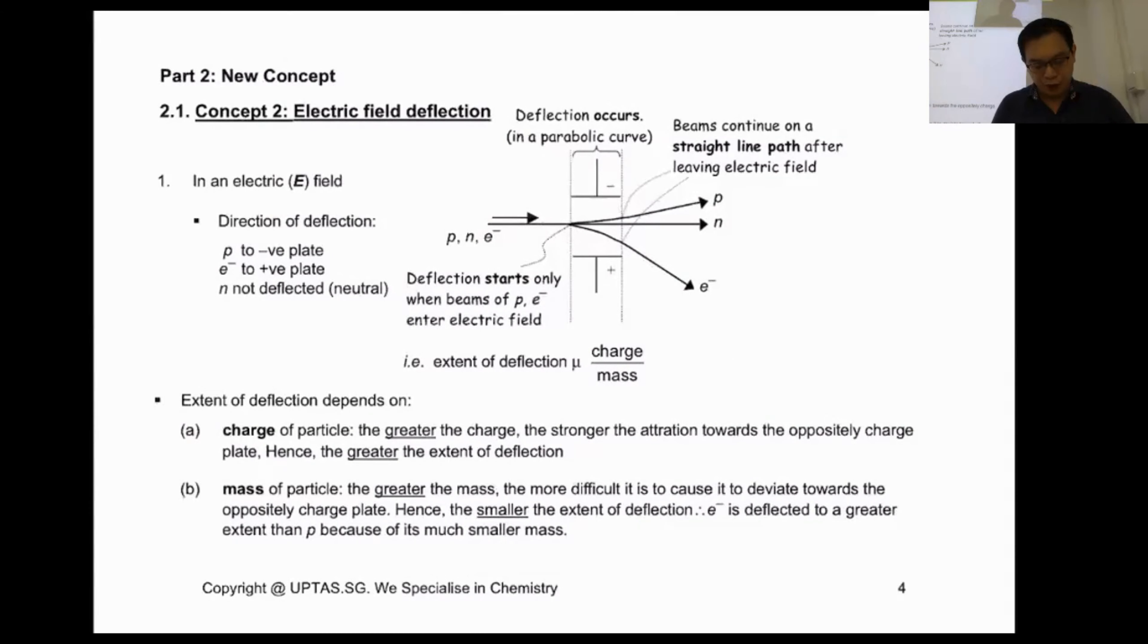We say that if you have a proton, neutron, electron pass through the field, the proton will be attracted towards the negative. Of course, proton is positive. Neutron is zero charge, not attracted to anything. Electron, on the other hand, is negative, will be attracted to the positive. This is what we know.